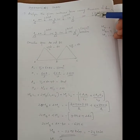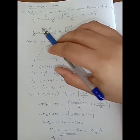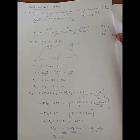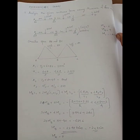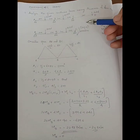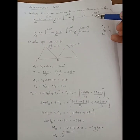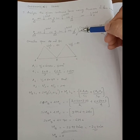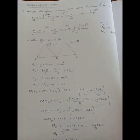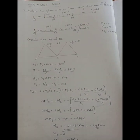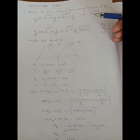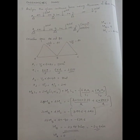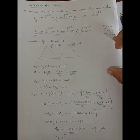The last section is the overhanging beam. In the first beam, CD is the overhanging section. The overhanging beam is the overhanging section. Here, the moment would be 20 into 2, that is 40 kNm.